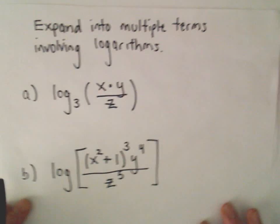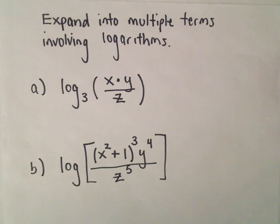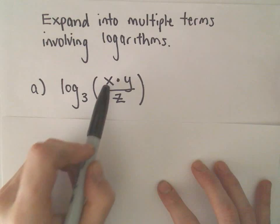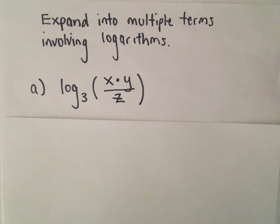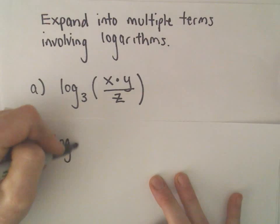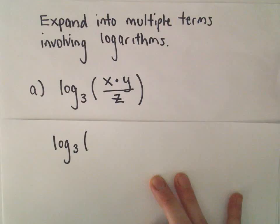Here we're going to expand our single logarithm into a few different logarithms. We've got log base 3 of x times y over z. The first thing I'm going to do is use the second property that says if we have a fraction, we can write that as subtraction.